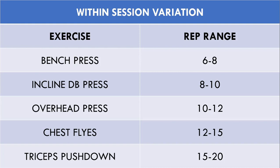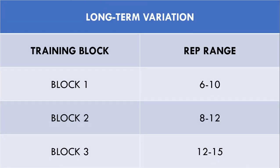From a long-term point of view, compound lifts may cycle through blocks of different rep ranges over time to provide a novel training stimulus. For example, the bench press can be performed in the 6-10 rep range for 2-3 months, in the 8-12 rep range for 2-3 months, and then in the 12-15 rep range for 2-3 months.